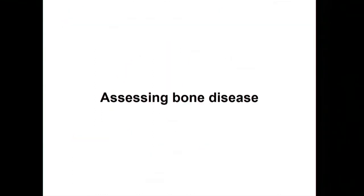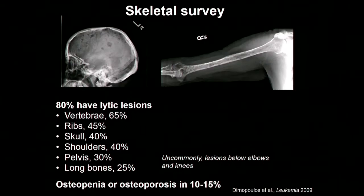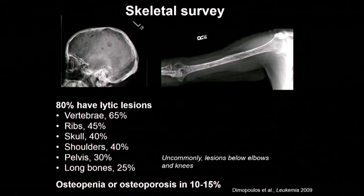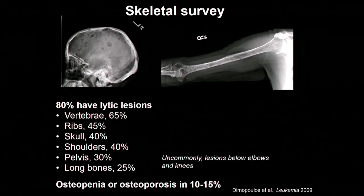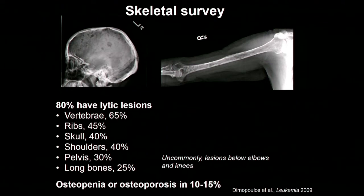Let's start off by thinking about how we assess bone involvement in multiple myeloma. The first modality is the skeletal survey, and this technology has been around for decades. In some patients, you have these classic punched-out lytic bone lesions present, say, in this patient's skull or in this patient's humerus. The majority of patients have lytic bone lesions — in some cases they cause symptoms, and in many cases they are a marker of your disease and how we define the diagnosis.